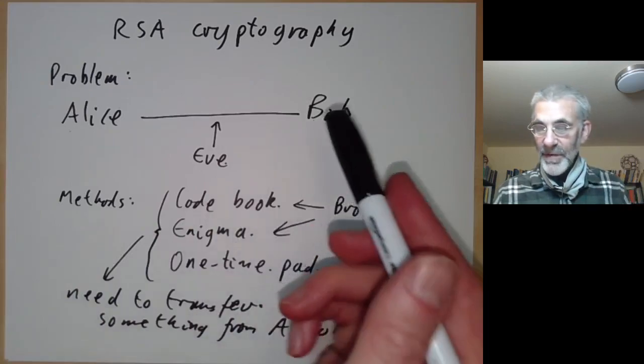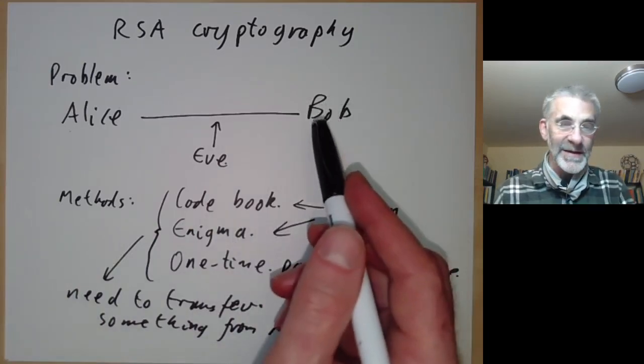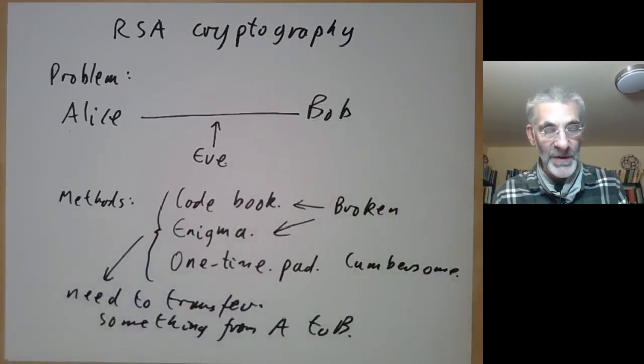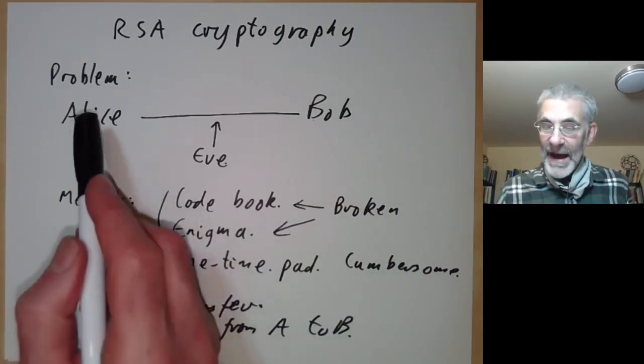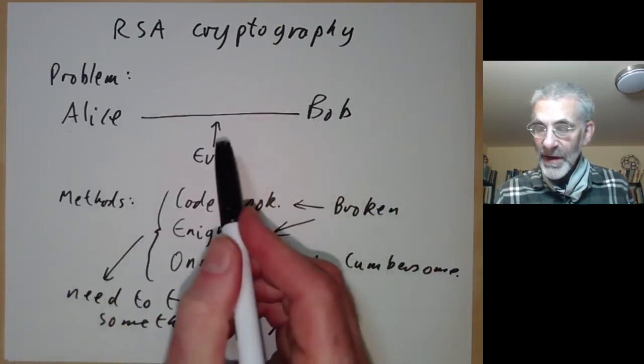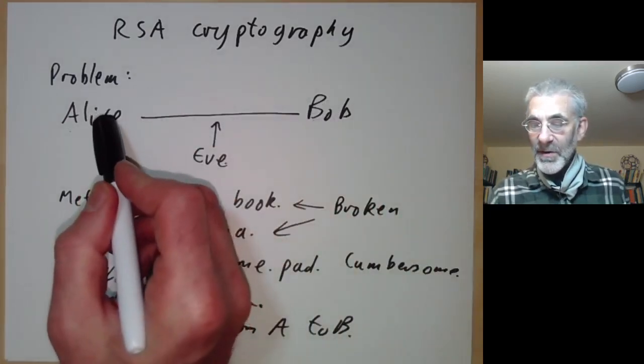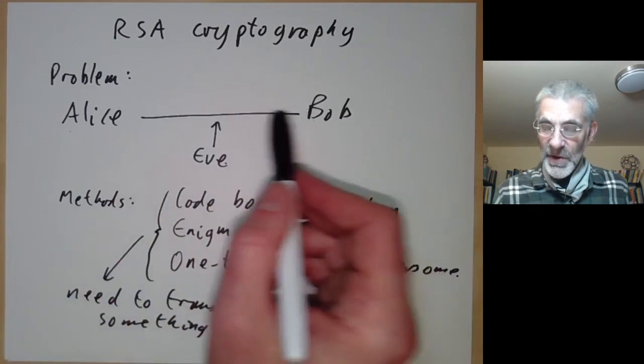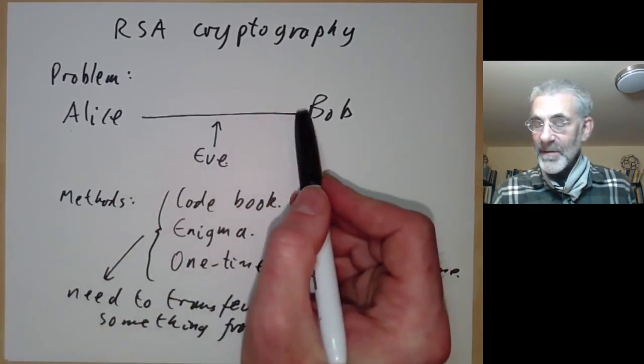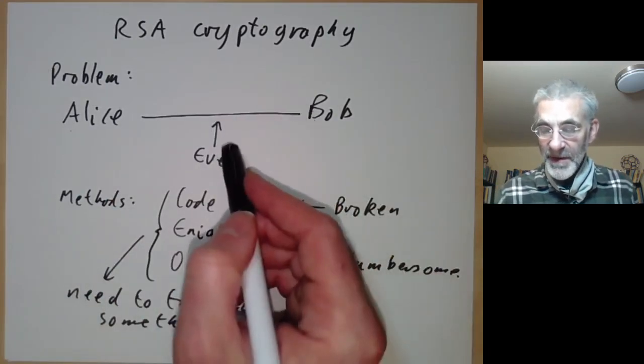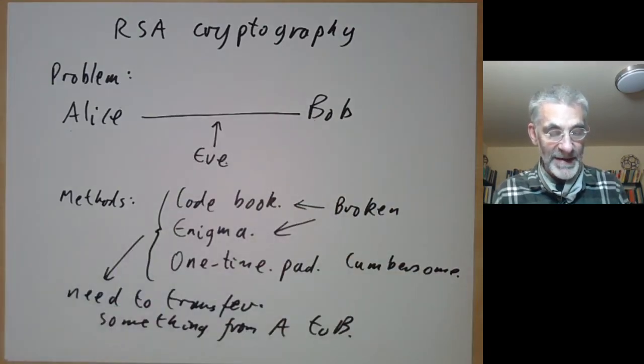If the internet seller had to send all customers a code book, this would be really inconvenient. So the problem is: how can Alice and Bob communicate without actually sending each other a physical object? They're only allowed to communicate over a telephone line or whatever where Eve can listen to everything either of them says.